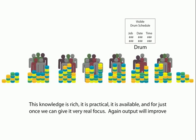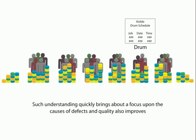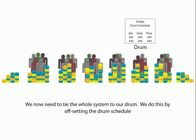Consider a defective product — if it has to be reworked or rejected, it has used constraint time that is unsellable and causes the system a loss of sale. If you produce a reject at the drum, or an item gets rejected after the drum, it's a loss to the whole system because that time used up by that resource cannot be made up anywhere. Such understanding quickly brings about a focus upon the cause of defects, and quality also improves — because now you know where to focus and why you have rejections.